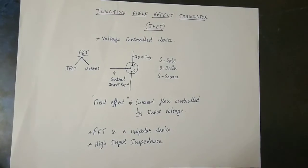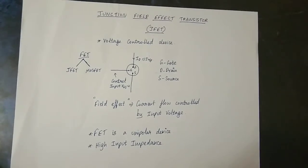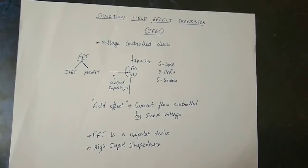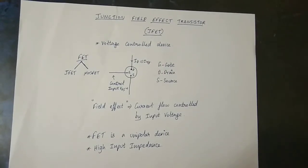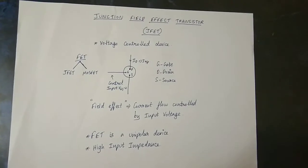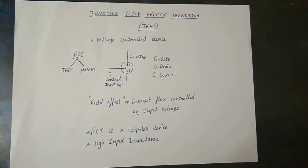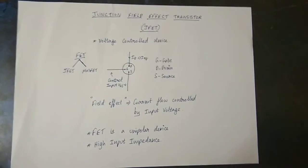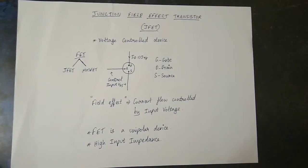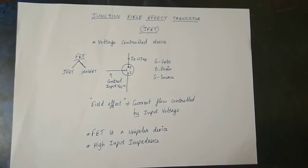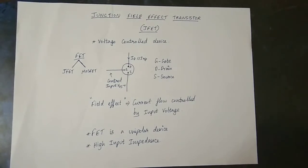JFET is controlled by voltage, specifically the electric field. If we control the electric field, the output current will be adjusted. That's why it's called a Field Effect Transistor.